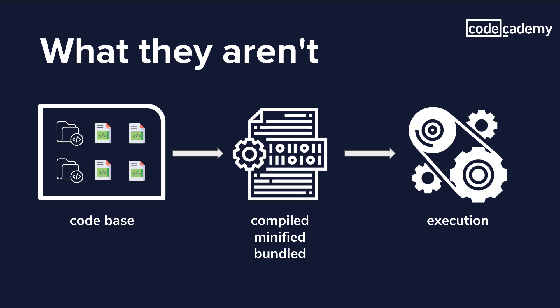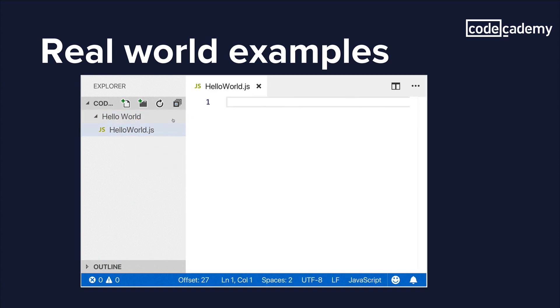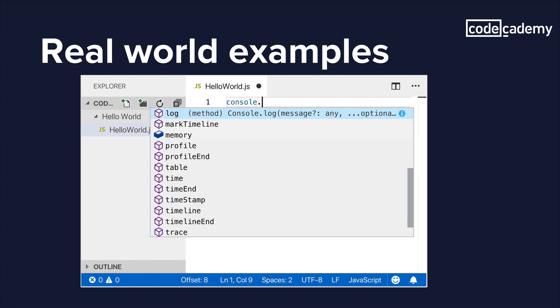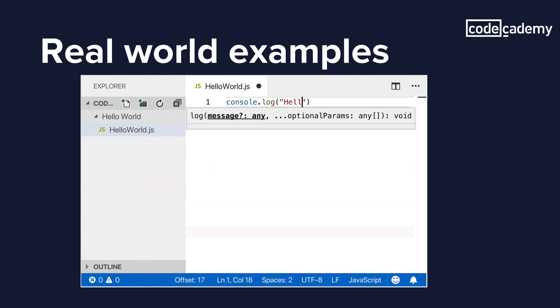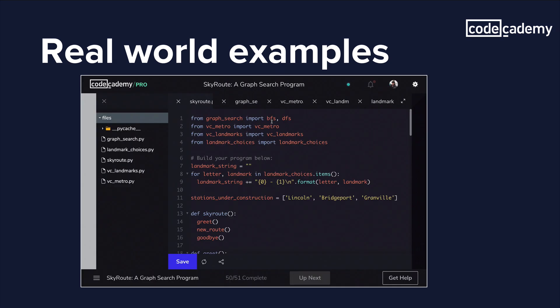So for example, if you had a C++ program, the code base for that program would be the actual C++ files — it wouldn't be the compiled files that would be run on the actual machine. Here we have a couple of examples of code bases out in the real world. The first example is just a Hello World program. You can see it's just a program that says Hello World, and even though it's only one file, that itself is a code base — it's all the code that makes up the Hello World project.